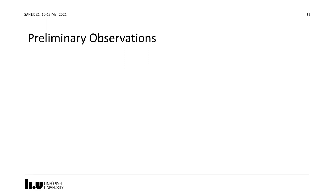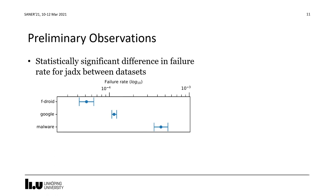Beginning with some preliminary observations: we noted noticeable differences between the datasets and wanted to see if these were statistically significant. We performed a thousand-fold bootstrap sampling of the results for JADX, which was the best-performing decompiler. Based on the 95% confidence intervals from this bootstrap, we see that there is a statistically significant difference between the datasets — with malware apps having about 10 times higher failure rates than open source apps, and Google Play apps showing about twice the failure rate. This is a substantial difference even though the absolute failure rates are low due to JADX's good performance.